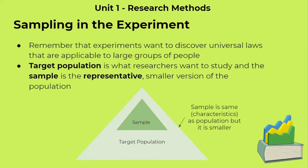Another main part of experimentation is sampling. Remember that quantitative research aims to discover universal laws, and we want to apply these laws to large groups of people. This is the polar opposite of qualitative research. So first, we're going to identify our target population. Our target population is basically the whole group of people that we want to test. This could be the United States, your school, large populations like that.